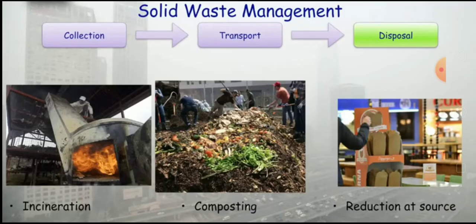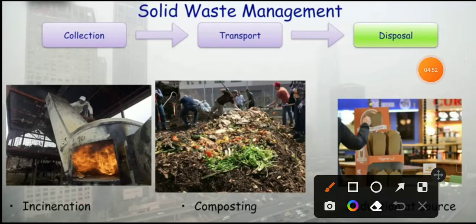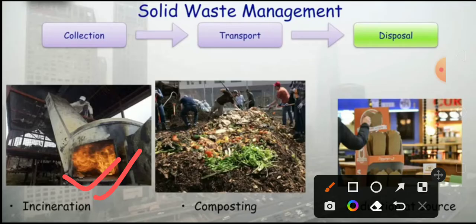Other disposal methods include incineration, composting, and reduction at source. In incineration, solid waste is burned at high temperatures. After burning, ash remains, and the different types of ash can be used for various purposes. High temperature is used for burning the different solid waste.